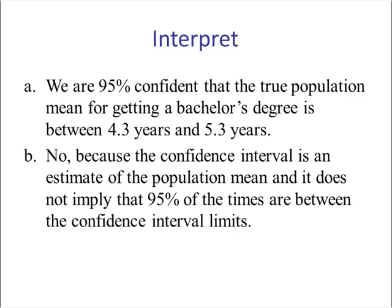Part B: No, the confidence interval does not contradict that fact. The confidence interval is an estimate of the population mean, and it does not imply that 95% of individual times fall between the confidence interval limits. We are saying we are 95% confident that the true population mean — the average — is between 4.3 years and 5.3 years.